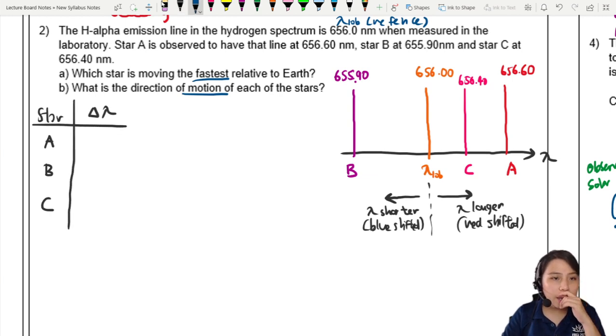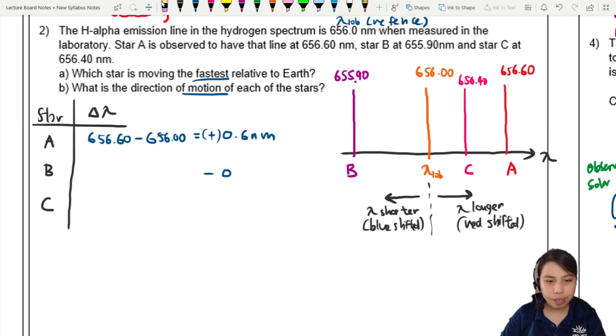So the first star A is 656.6 minus the reference 656.0. So delta lambda here is 0.6 nanometers, positive. We do the same thing for the rest and we find that the delta lambda is negative 0.10 nanometers for star B. Star C is also positive to the right, this is 0.40 nanometers.